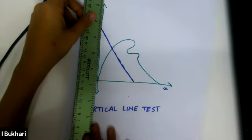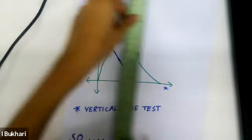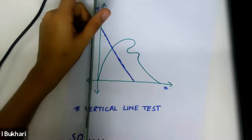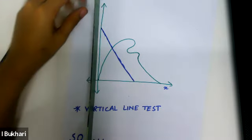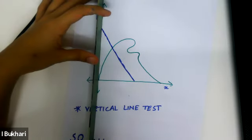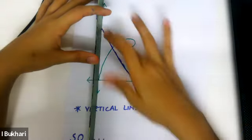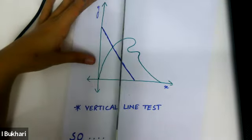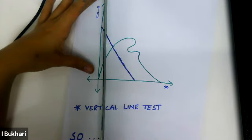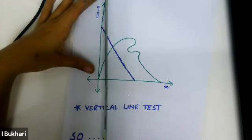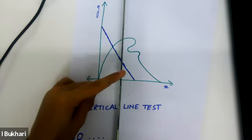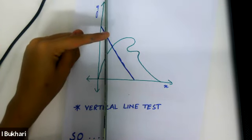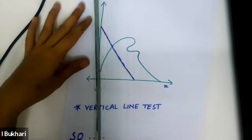Imagine moving the y-axis across the graph like a scanner. Doing the test for the blue line: as I pass it across, it only ever touches the line at one point. Over here it touches at this point, over here at this point — always just one point.